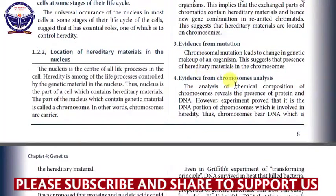Evidence number four is the evidence from chromosomal analysis. The analysis of the chemical composition of chromosomes reveals the presence of protein and DNA. However, experiments proved that it is the DNA portion of the chromosome which is involved in heredity. Thus, chromosomes bear DNA, which is the hereditary material. We shall discuss later why DNA is the hereditary material and not protein.